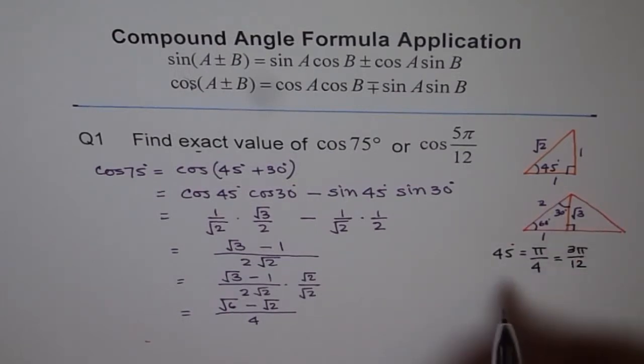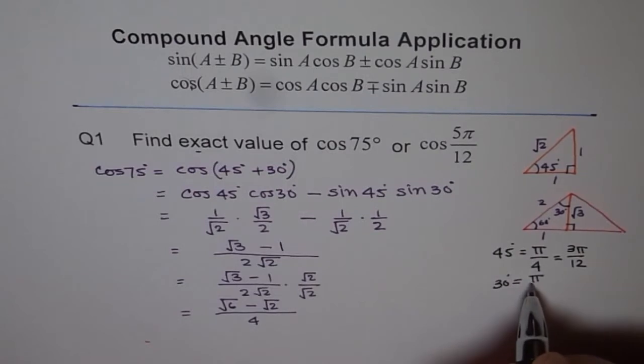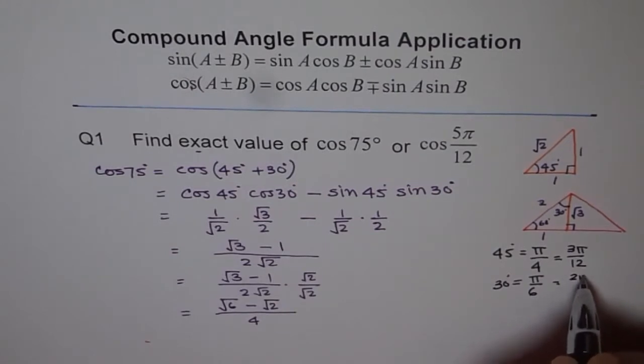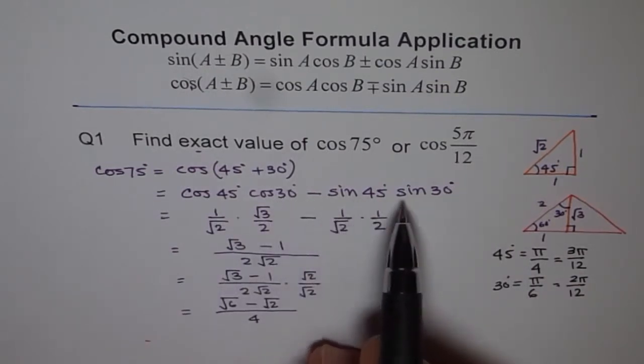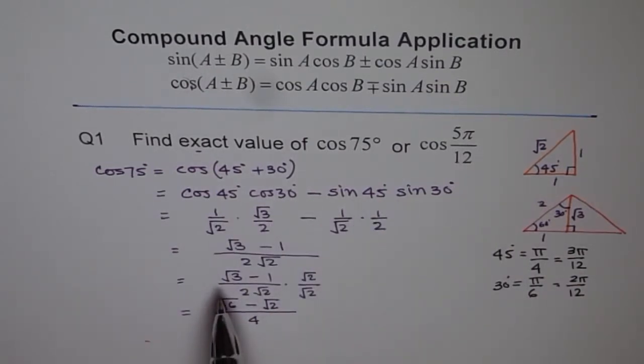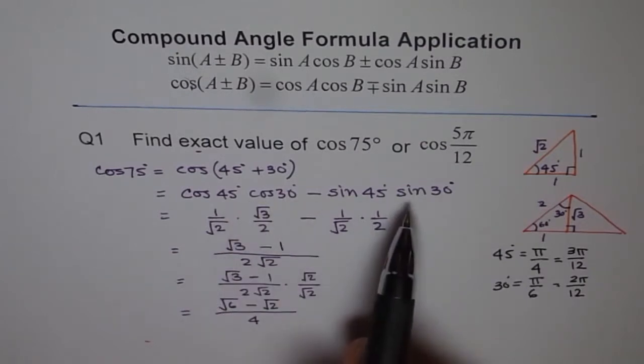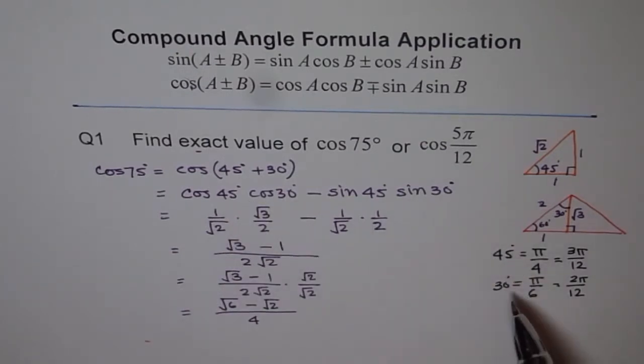Similarly, 30 degrees is what? 30 degrees is π/6. But if you want to write with a denominator of 12, it is 2π/12. Correct? Now, I am going backwards because here I have already given you the solution, right? So, taking advantage of what we have and then connecting it to what we want to do. Correct? That is the whole strategy.